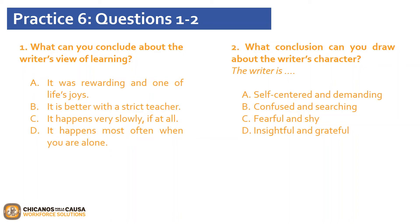Now that you have read the excerpt, let's answer the following questions. What can you conclude about the writer's view of learning? A, it was rewarding and one of life's joys; B, it is better with a strict teacher; C, it happens very slowly if at all; or D, it happens most often when you are alone? If you selected A, you are correct — it was rewarding and one of life's joys. This answer is found in the seventh and eighth lines of paragraph one. Next question: what conclusion can you draw about the writer's character? A, self-centered and demanding; B, confused and searching; C, fearful and shy; or D, insightful and grateful? The correct answer is D — the writer is insightful and grateful.